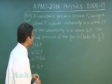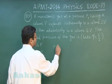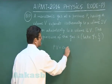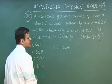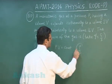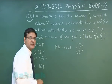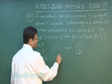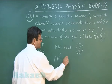In the first step, using pV = constant for the isothermal process, the pressure comes out to be p/2. In the second step, you use the equation pV^γ = constant for the adiabatic process.